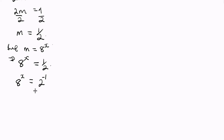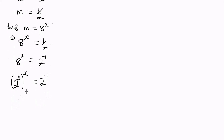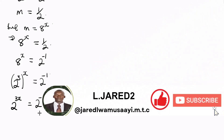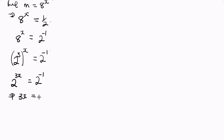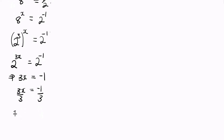From the rules of indices — I'll leave a link in the description below — 8 can be expressed in terms of base 2, so 8 is the same as 2 raised to power 3. Therefore we have 2 raised to power 3, and the whole thing raised to power x, equals 2 raised to power negative 1. By the rules of indices, the left hand side becomes 2 raised to power 3x, equal to 2 raised to power negative 1. Since the bases are the same on both sides, we compare the powers: 3x equals negative 1. Dividing both sides by 3, we get x equals negative one third. That's the answer from Method 1.